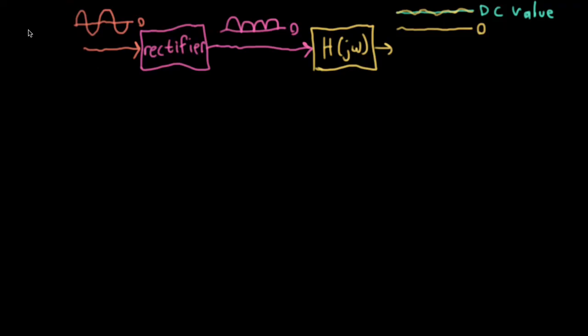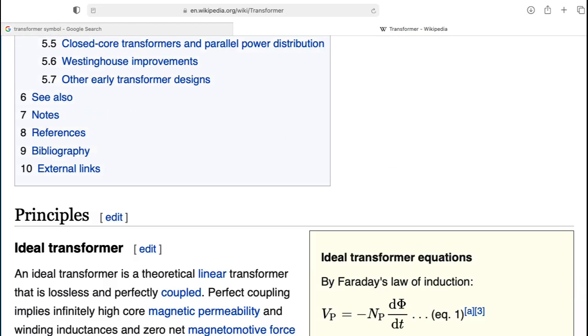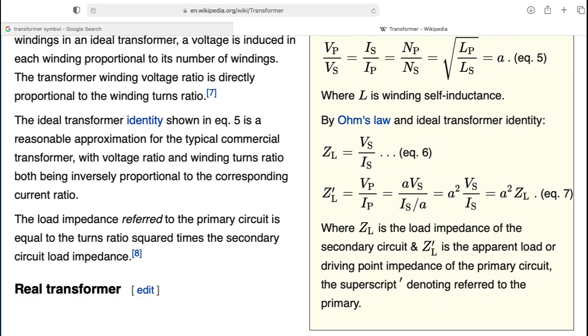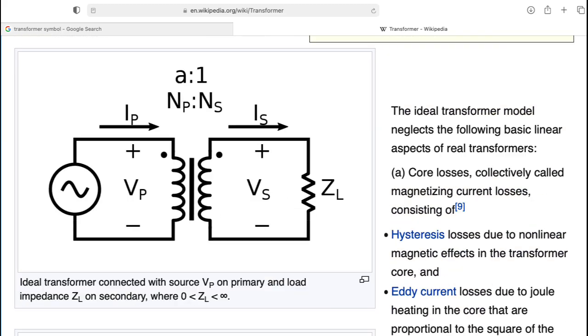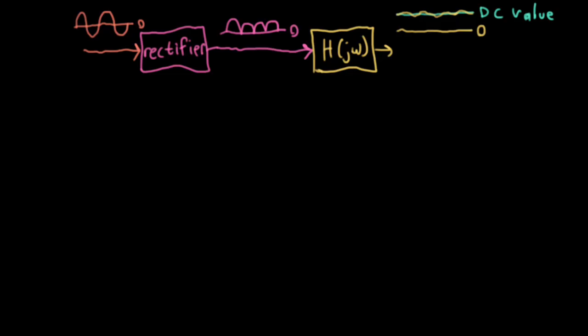In practice, there's usually a transformer that goes in front here that takes the actual voltage coming out of the wall and steps it down to some voltage that's more appropriate for what's coming later. But we're not going to worry about that here. Let's call this rectified signal x(t) and the signal coming out of the filter y(t).